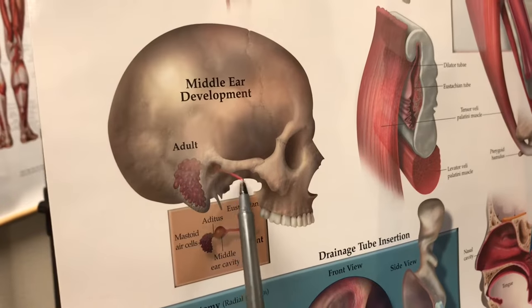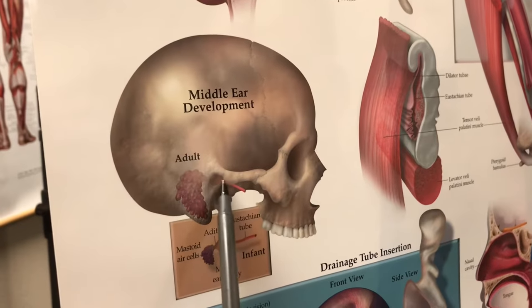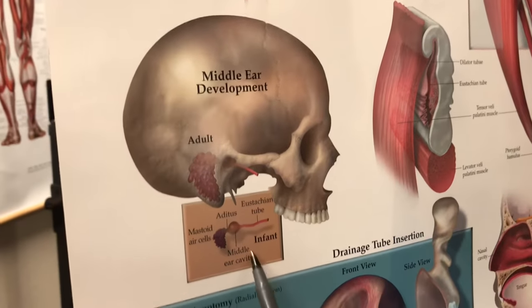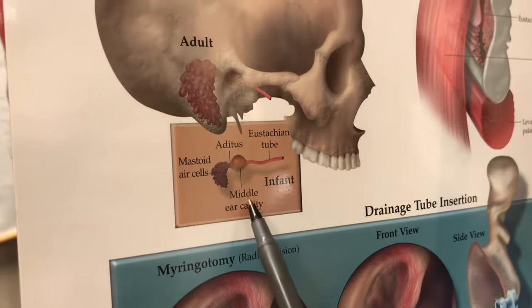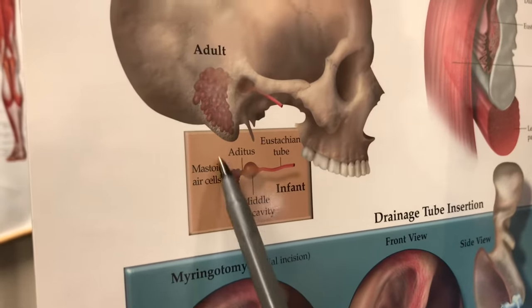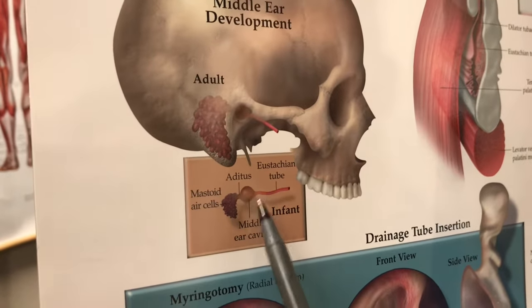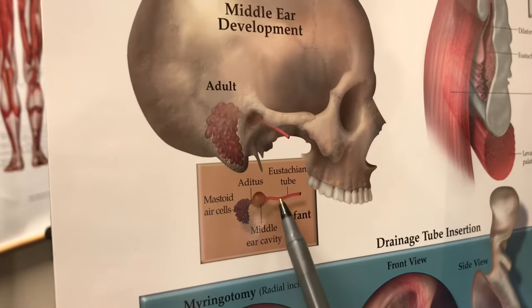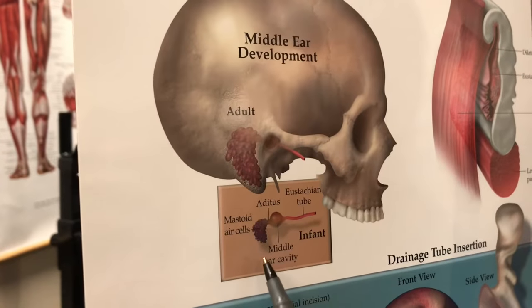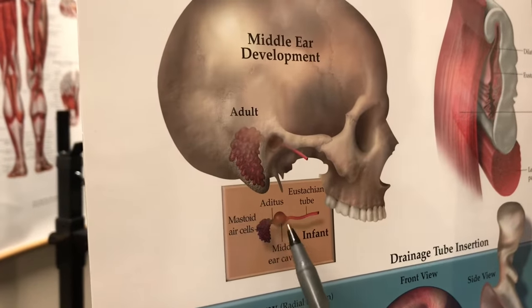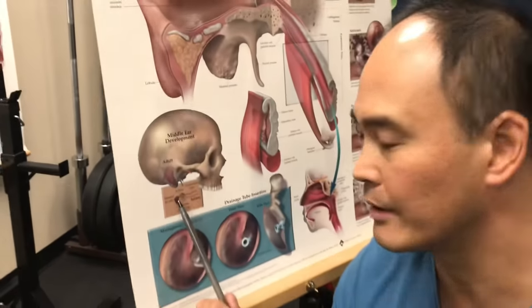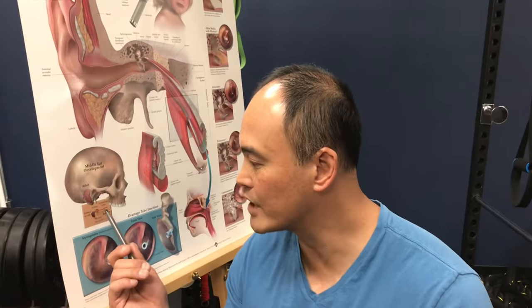However, in an infant or little kids, the configuration is different. These are the mastoid air cells and this is the middle ear cavity. You can see the eustachian tube is more horizontal — even pointing upwards. That's why you see a lot of kids and infants have issues with ear infections, because of that configuration where the eustachian tube points upward so bacteria can't escape.